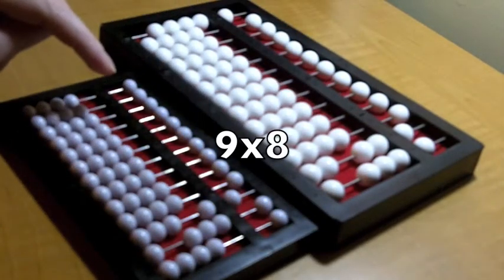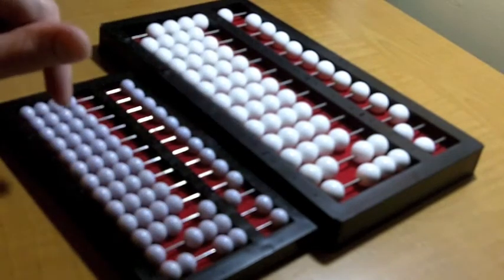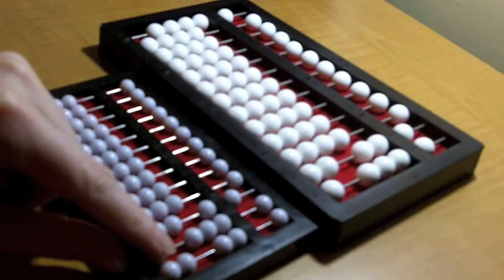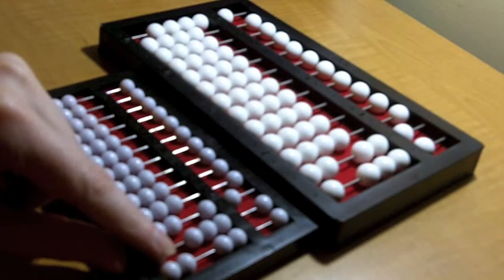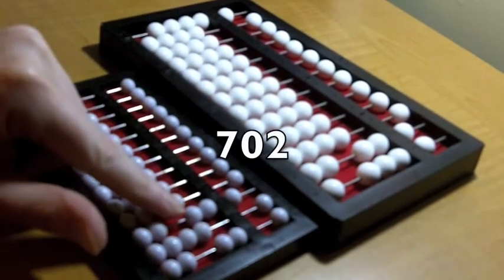9 times 8 is 72, so I'm going to go ahead and set the 2 so I don't forget. Now I'm going to say 70 plus 30. 70 plus 30 is 100, so I'm going to set 100 bead and clear the tens.